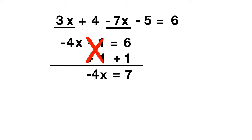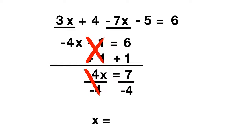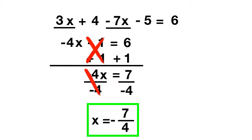Now we get rid of the negative 4 by dividing by negative 4. That cancels out, leaving just x. On the other side, 7 divided by negative 4 we write as a fraction: x is equal to negative 7 fourths.